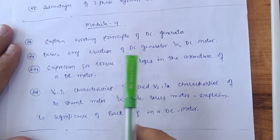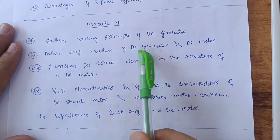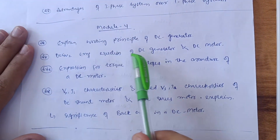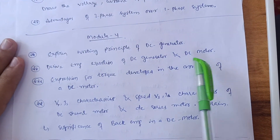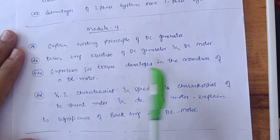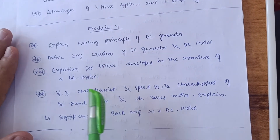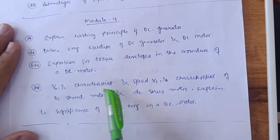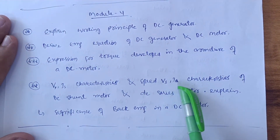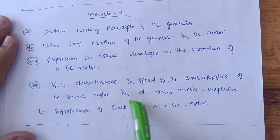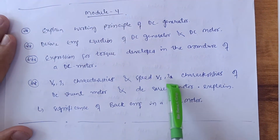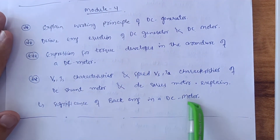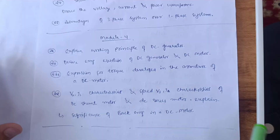Module 4 focuses on generators and motors. You have to cover: explain the working principle of a DC generator and derive the EMF equation of a DC generator; the DC motor and the expression for torque developed in the armature of a DC motor; V-I characteristics of DC shunt motor and DC series motor; and the significance of back EMF in a DC motor. This content is enough for Module 4 to score well.